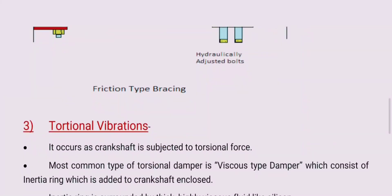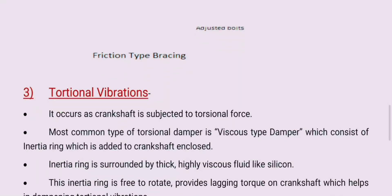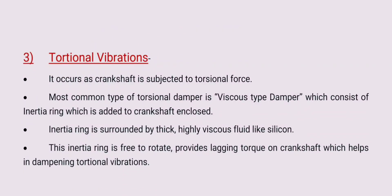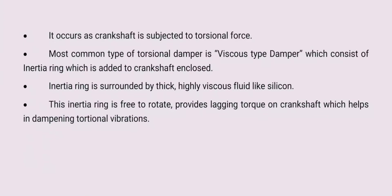The third type is torsional vibration. It occurs because the crankshaft is subjected to torsional forces. The most common type of torsional damper is the viscous type damper, which consists of an inertia ring added to the crankshaft enclosed in a casing. The inertia ring is surrounded by a thick, highly viscous fluid like silicone. This inertia ring is free to rotate, and when the crankshaft rotates, it provides a lagging torque on the crankshaft which helps in dampening the torsional vibration.